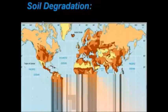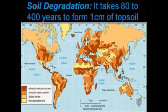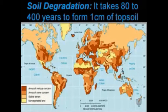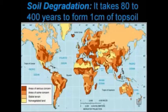Soil degradation — all throughout the world, this is a big issue. To make that layer of topsoil, it takes 80 to 400 years just to form one centimeter. Think about how long it takes to form it, but how quickly all that can go to waste — something that takes 80 to 400 years can be wiped out just by a guy coming in and plowing the field.